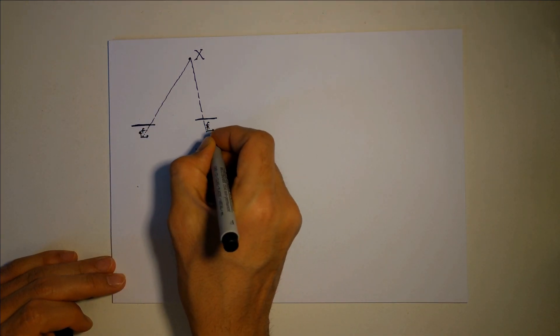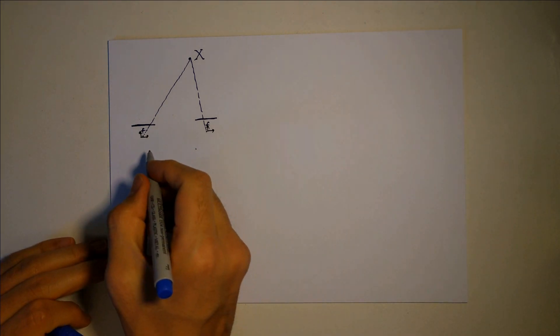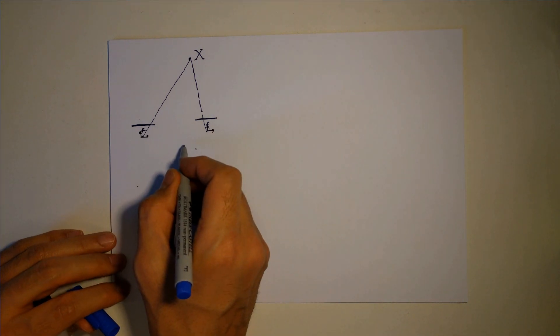And this is my coordinate system here, the first camera and the second camera, and I know the distance between these two cameras. This distance is X.